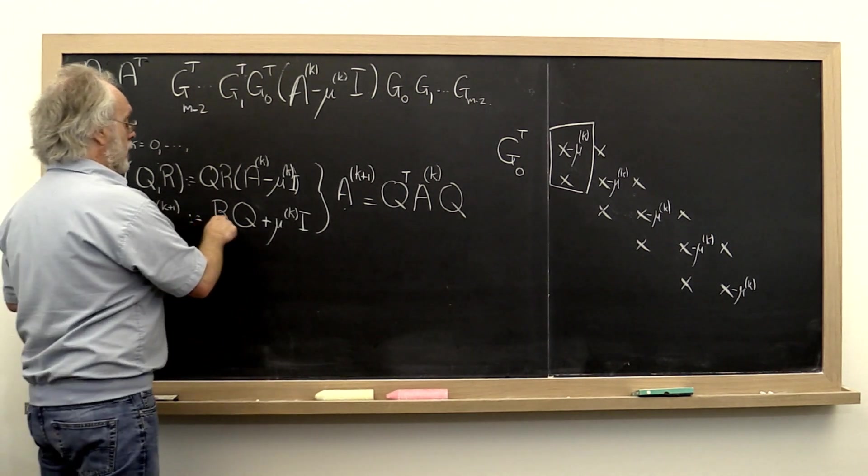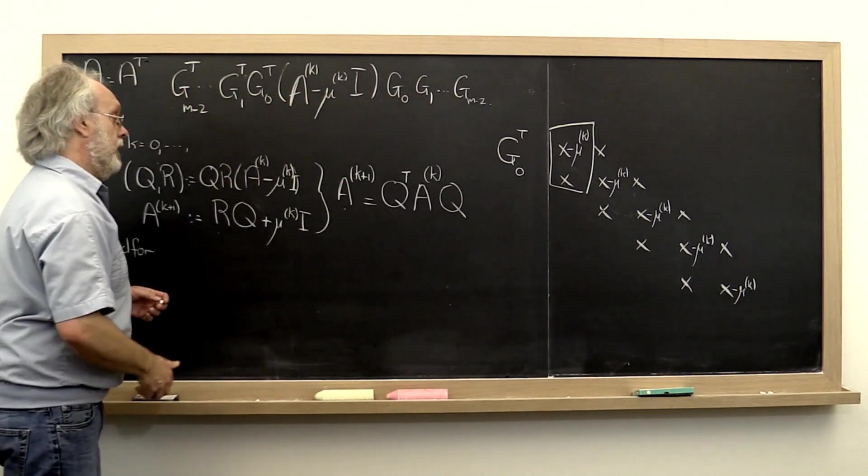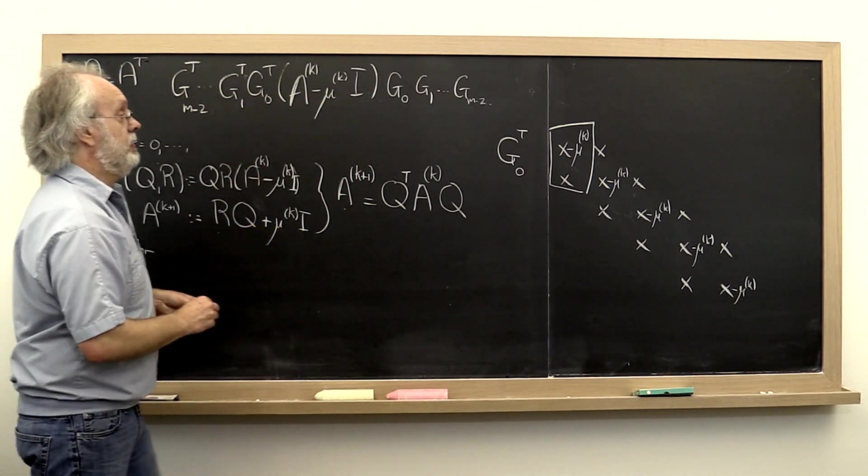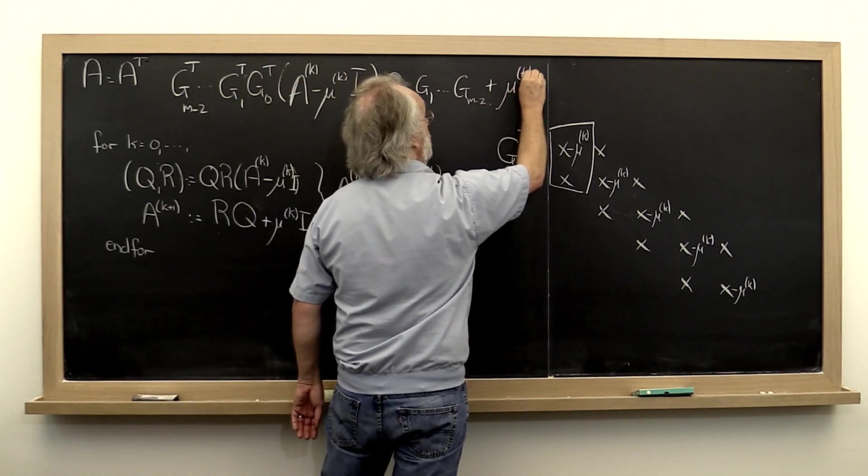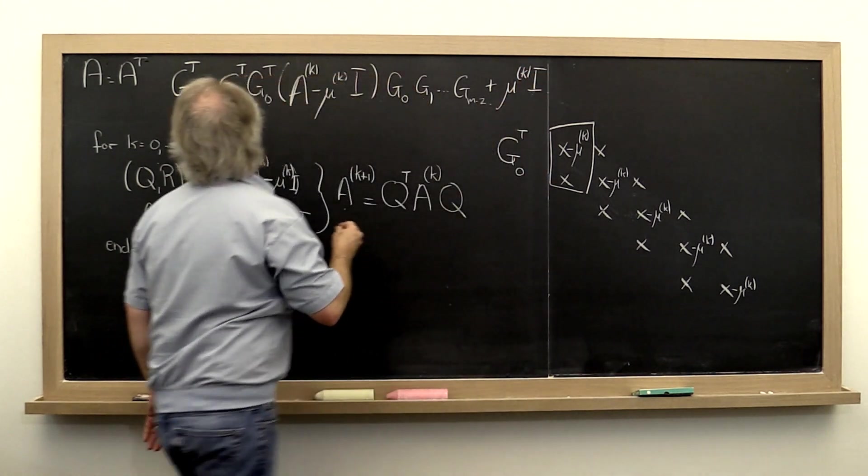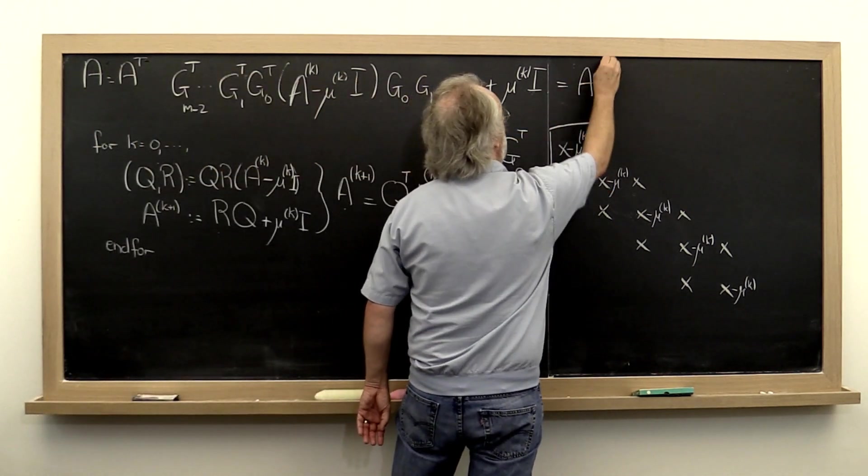And then R times Q is a matter of having that effect from the right. And then we need to add the shift back in to create our next iteration. That's equal to our next one.